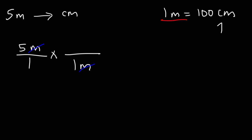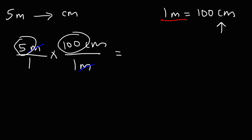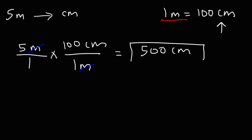So the other part — the 100 centimeters — we're going to put it on top of the second fraction. This tells us that we need to multiply, since both of these numbers are on the numerators of the fractions. So it's going to be 5 times 100, which is 500 centimeters. That's the answer for the first example.